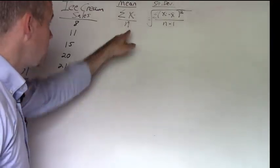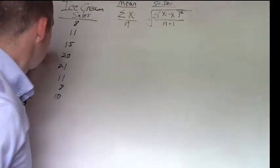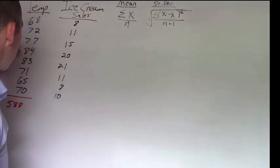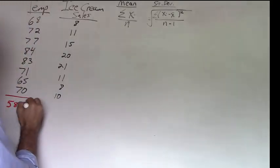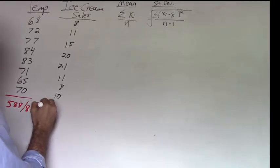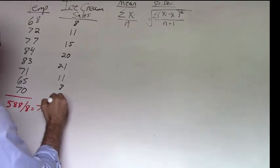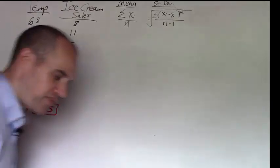Next, I'm going to divide that by the sample size, 1, 2, 3, 4, 5, 6, 7, 8. So I'm taking 588 divided by 8. If I do that, that gives me an average value of 73.5.